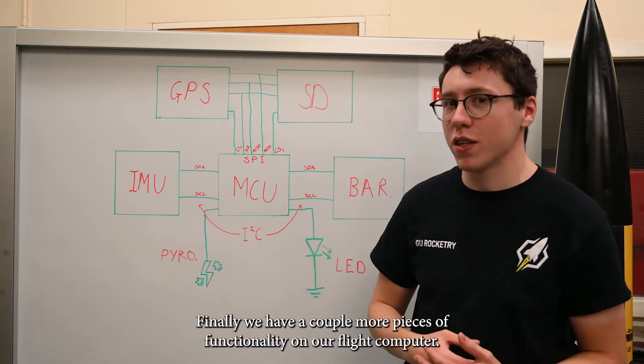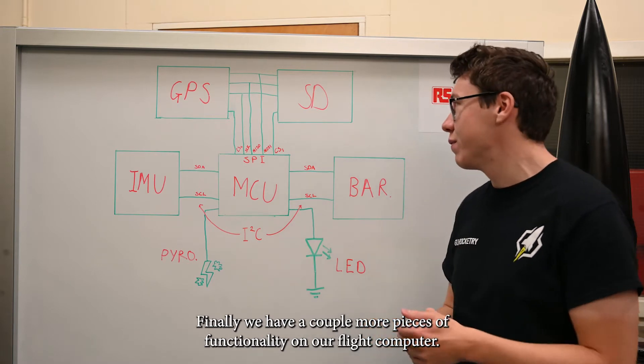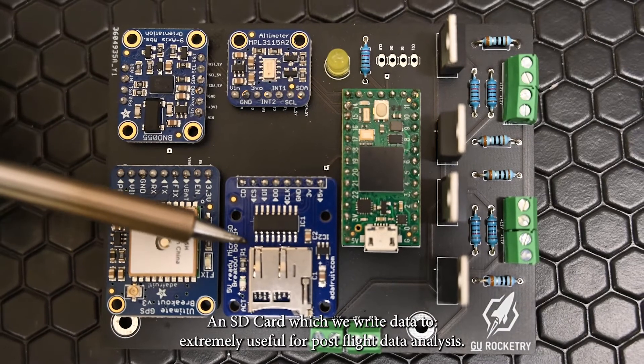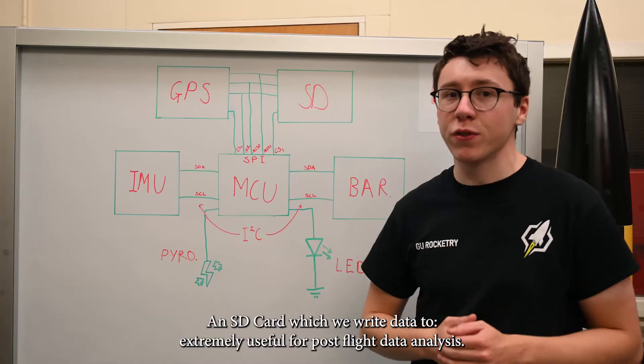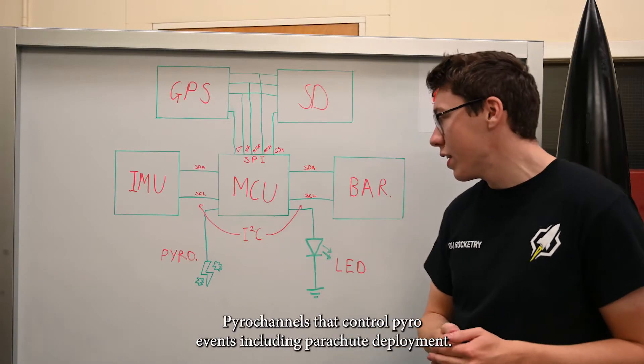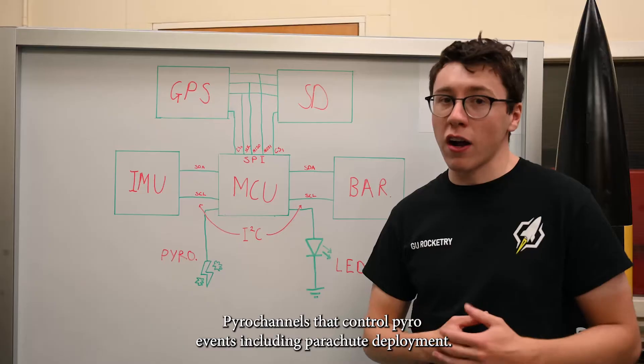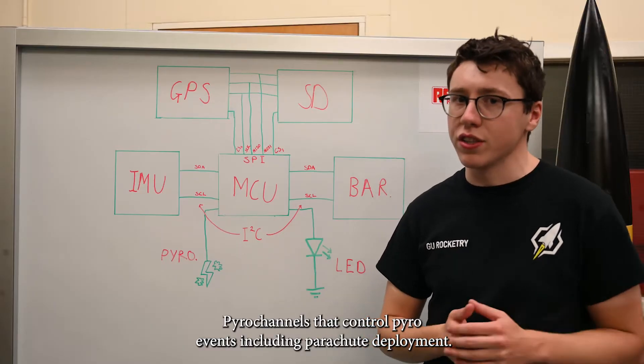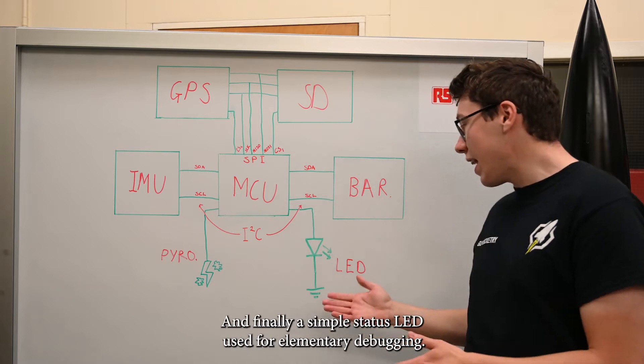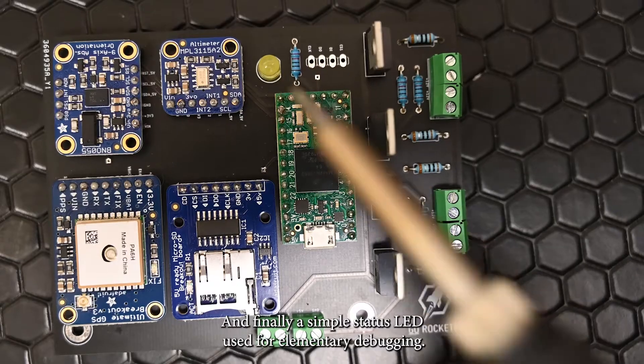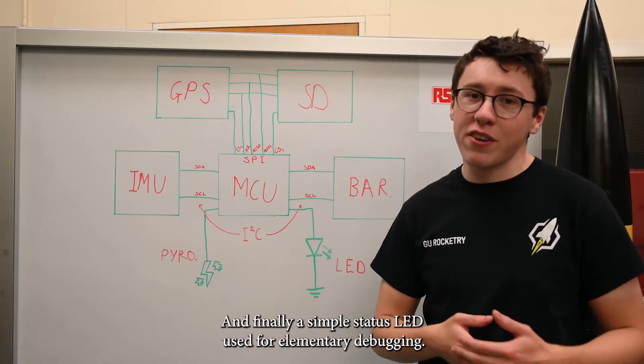Finally, we have a couple more pieces of functionality on our flight computer. We have the SD card here, which we write to, extremely useful for post-flight analysis. We have our pyro channels down here. Now these control our pyro events such as parachute deployment. And lastly, a status LED. This is fantastic for elementary debugging.